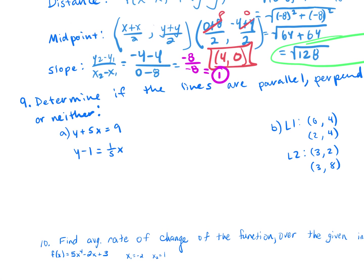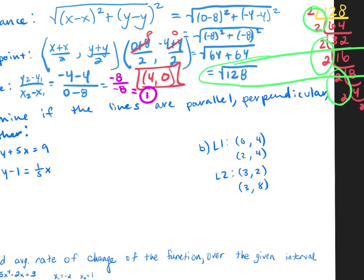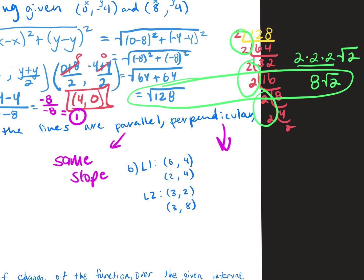Let's talk about parallel, perpendicular, and neither. Simple math is really important in something like this because if you add or subtract incorrectly, that could change your answer from parallel, perpendicular, or neither. If you have two lines and you're comparing their slopes — parallel lines have the same slope. Perpendicular lines have opposite reciprocal slopes.